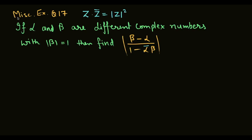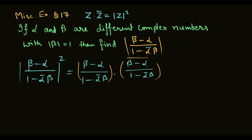z into z conjugate equal to modulus of z से related, miscellaneous exercise का question number 17 देखते हैं: If alpha and beta are different complex numbers with modulus of beta equal to 1, then find modulus of beta minus alpha upon 1 minus alpha conjugate into beta. इस question को solve करने के लिए यह वाली property use करेंगे।